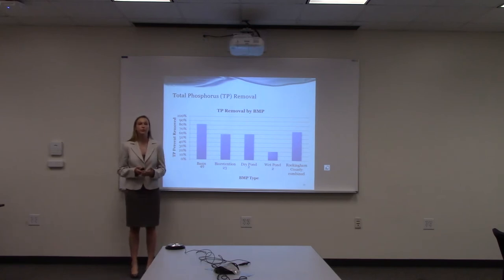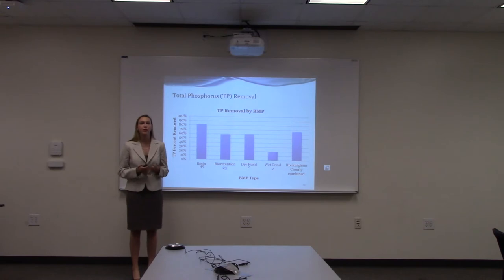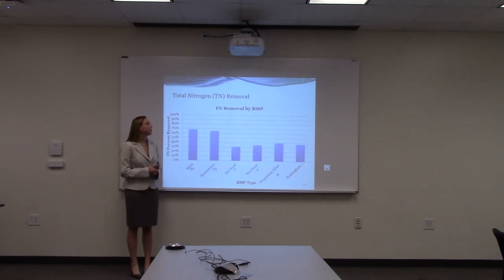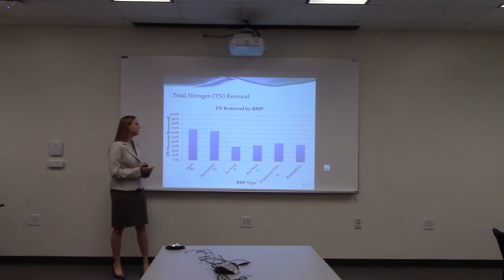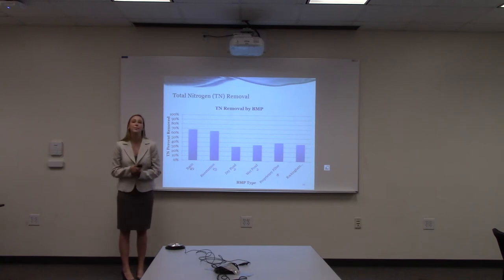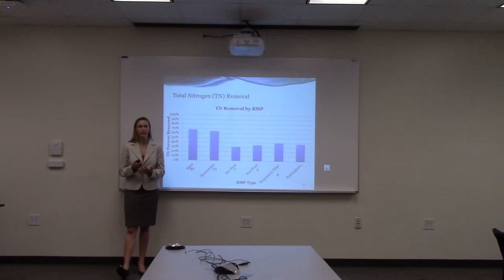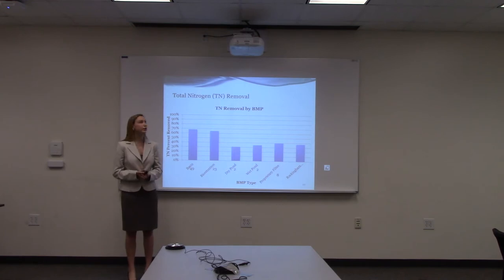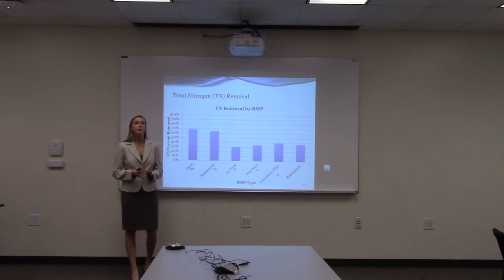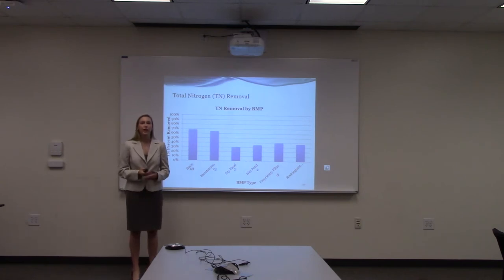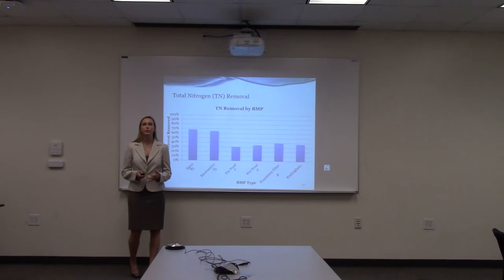The last analysis was total nitrogen. Basins are still the most effective with bioretentions a close second, removing over 67%, while dry ponds and wet ponds are the least effective. In Rockingham County, BMP facilities are not as efficient for removing total nitrogen — they only remove about 37%. But this is still better than untreated areas, where all nutrients from stormwater would flow directly into larger bodies of water with zero removal.